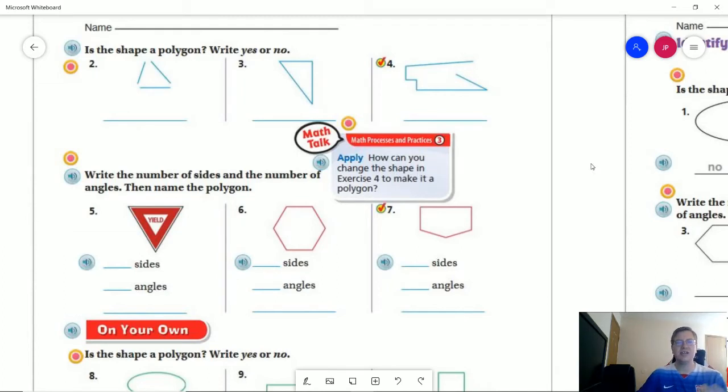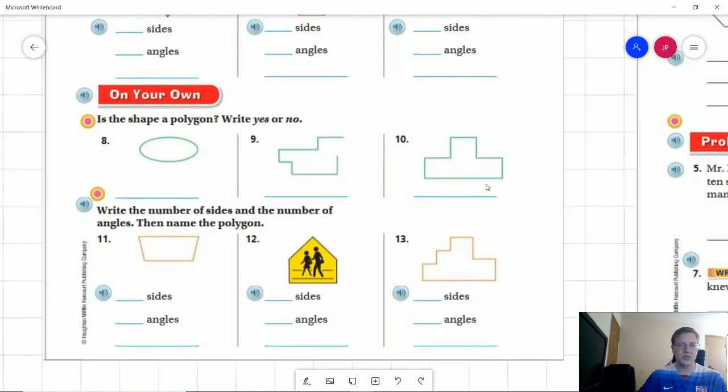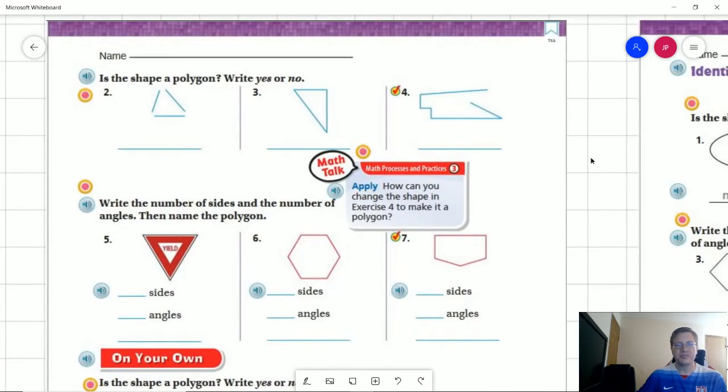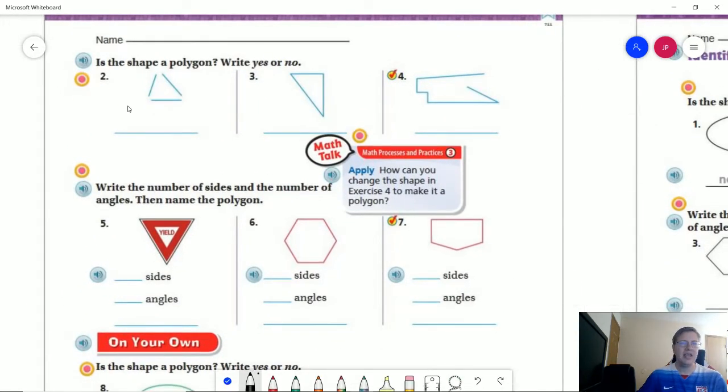We're just going to be answering is the shape a polygon, yes or no. And we're going to be talking about how many sides, how many angles, and what the names would be as we go through this page. So go ahead and pause real quick and when you're ready hit play and we'll go ahead and talk through the answers.